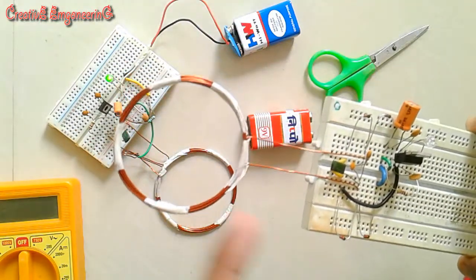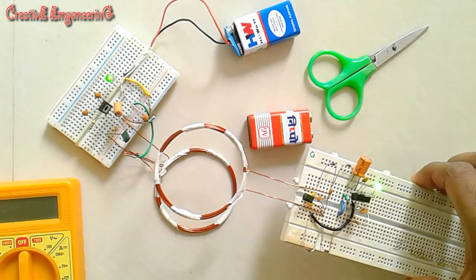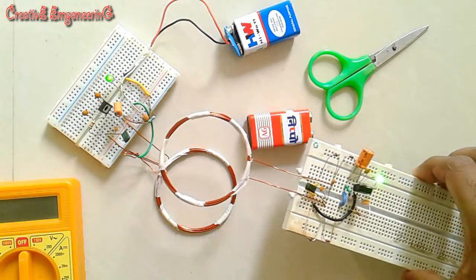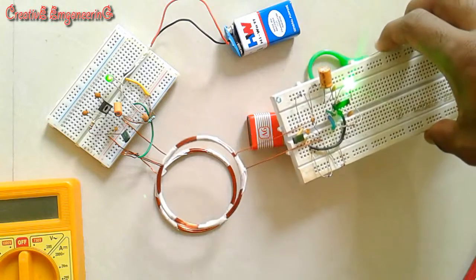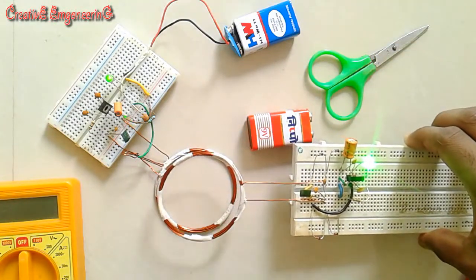And I brought this circuit close to the transmitter. The LED turns on. When very close, the brightness increases.